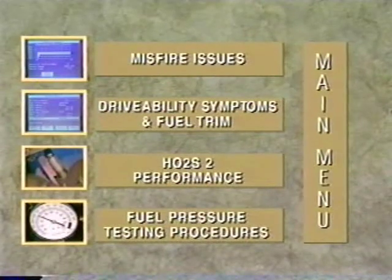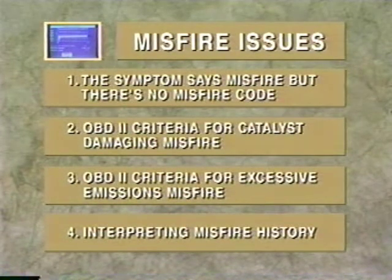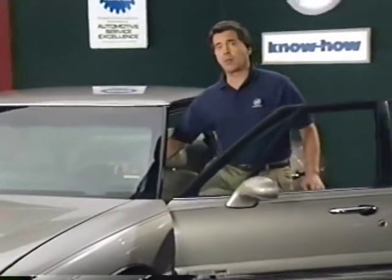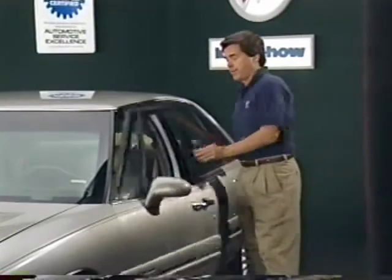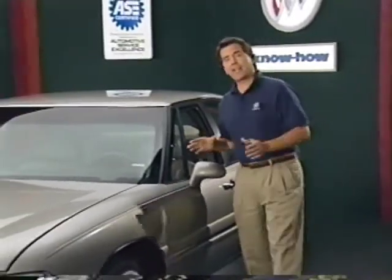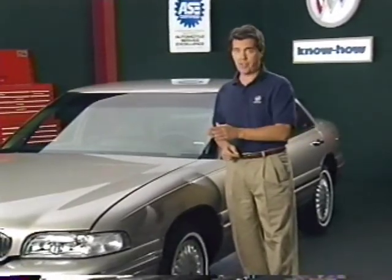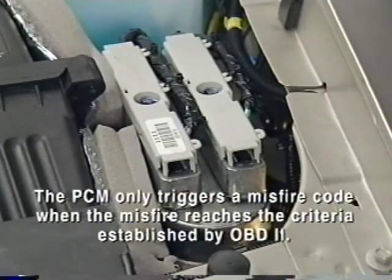Here's a look at some information related to engine misfire. I want to cover some possible misconceptions concerning misfire and the Tech 2 feature that allows you to access the misfire history of individual cylinders. Let's say a car arrives with a complaint of stumble under load. You check the trouble codes and there's nothing related to misfire. Does this mean there's no misfire occurring? Not necessarily. It's important to understand that even with OBD-II, it's still possible to encounter pretty substantial misfire without setting a misfire code. By design, the PCM only triggers a misfire code when the misfire reaches the criteria established by OBD-II.